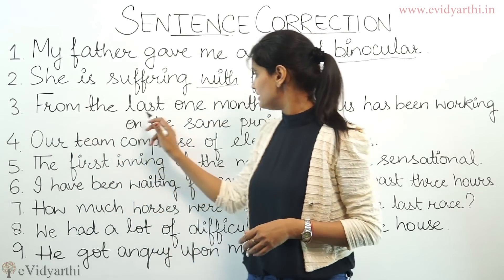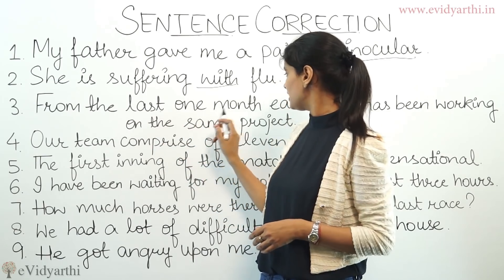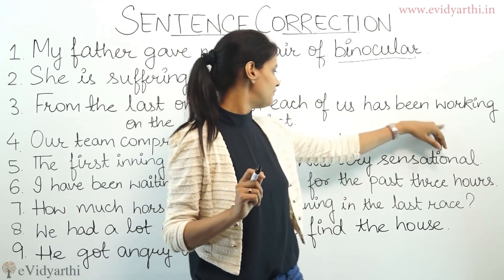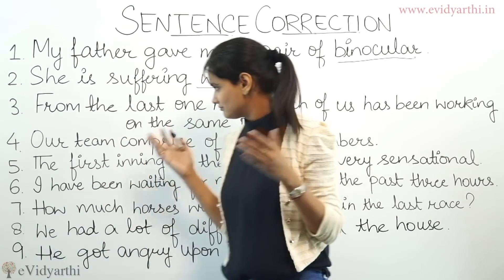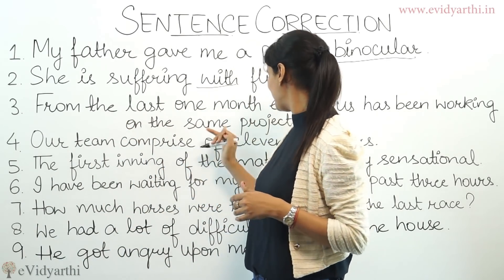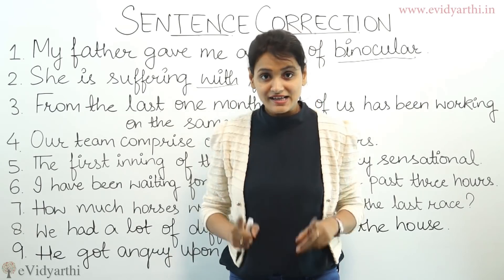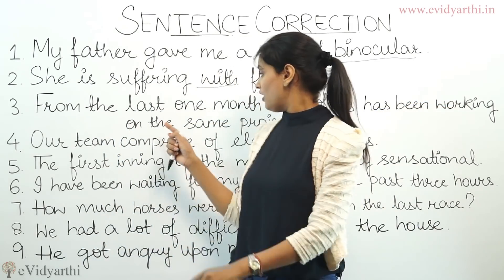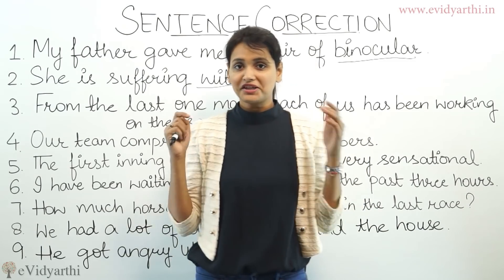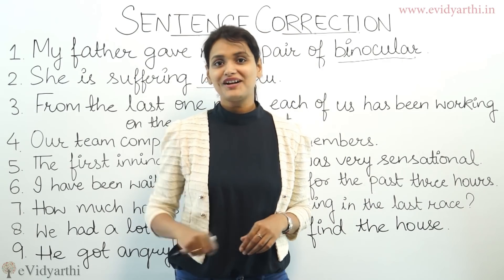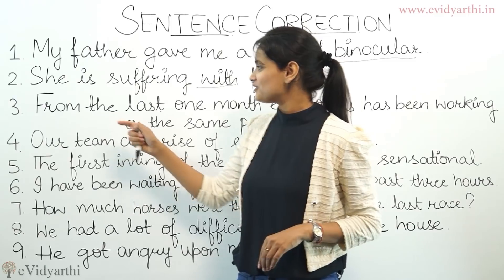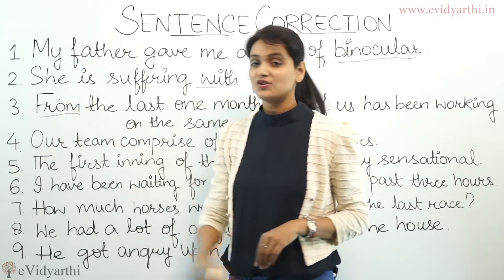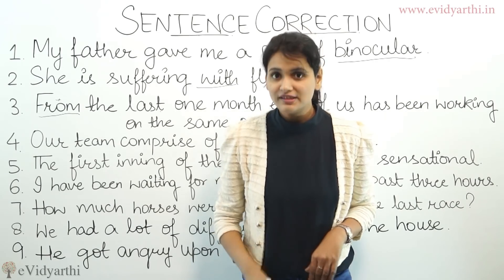Next is: from the last one month, each of us has been working on the same project. So what's wrong in this? Are you able to find out? It's not 'from the last.' It's wrong. It's 'for the last month.'